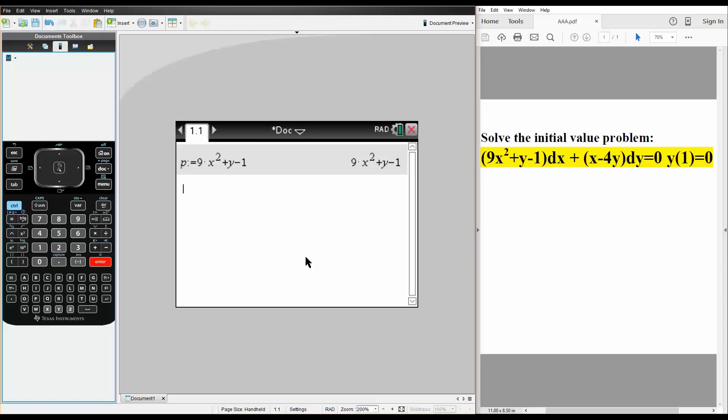And now we do Q. Q is defined as the term connected with dy. So, Q would be defined as x - 4y.